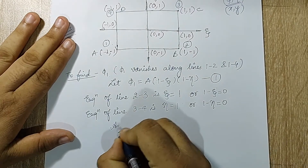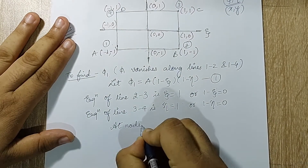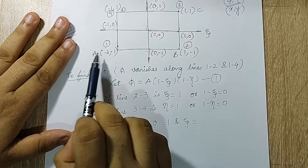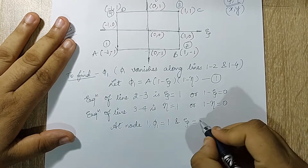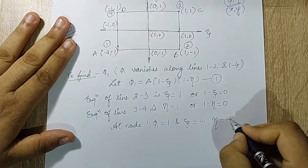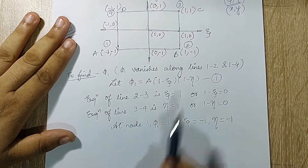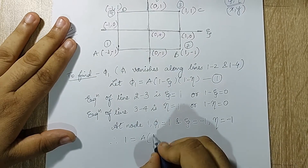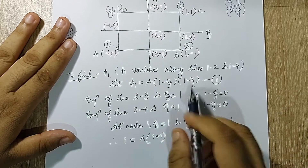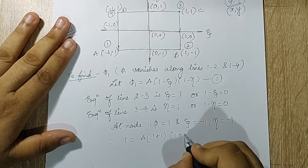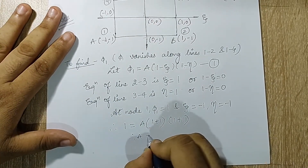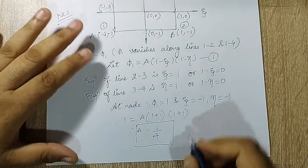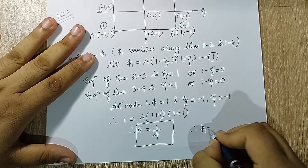To calculate the constant a, at node 1 phi_1 must equal one. At node 1, zeta equals minus one and eta equals minus one. Substituting: 1 = a · (1 − (−1))(1 − (−1)) = a · 2 · 2 = 4a, therefore a = 1/4. Substituting back, phi_1 = (1/4)(1 − zeta)(1 − eta).